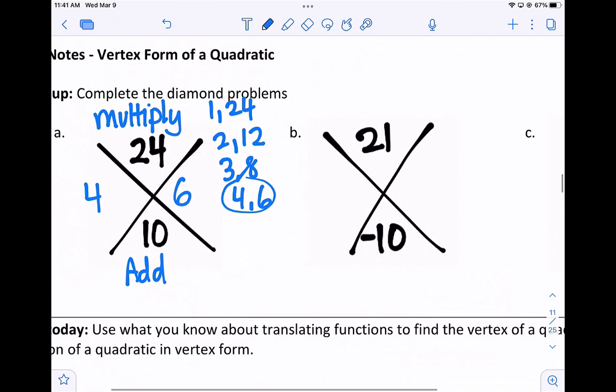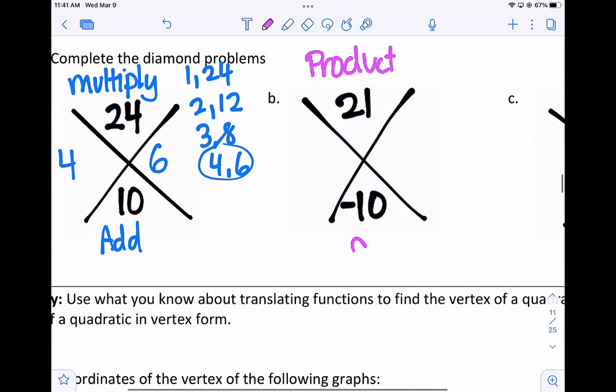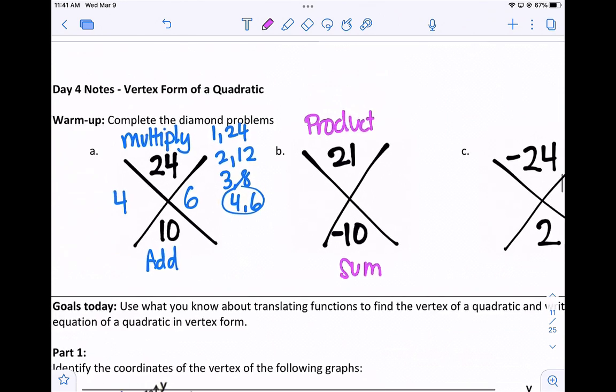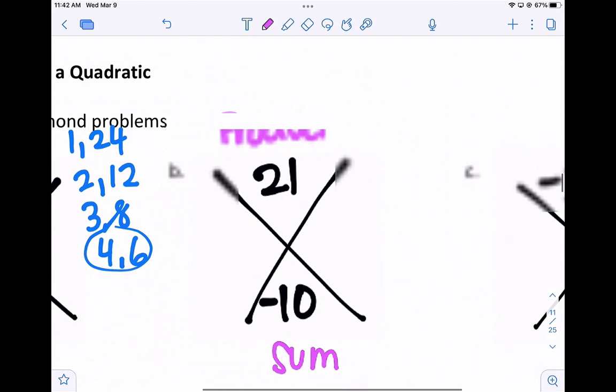Again, they must multiply to the top number. In other words, it's called the product. So the product of the two side numbers will be 21, and the sum will be negative 10. I just like to start by looking at factors of 21, what multiplies to 21: 1 and 21, 3 and 7.